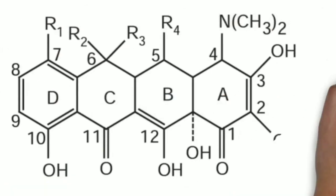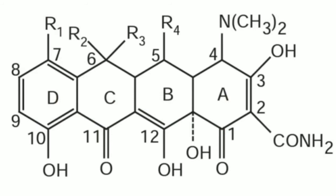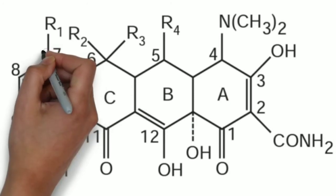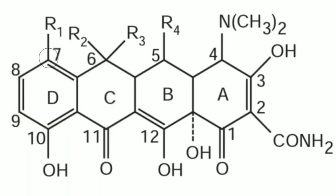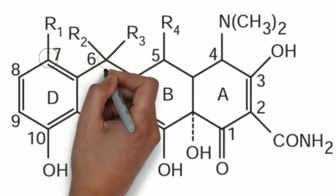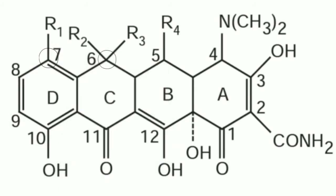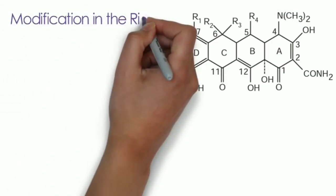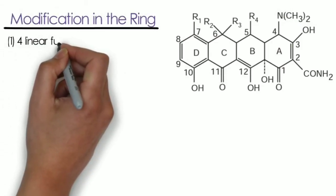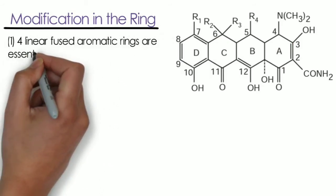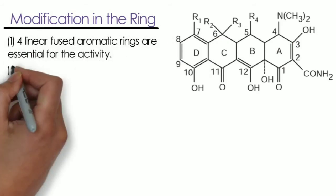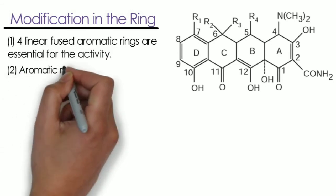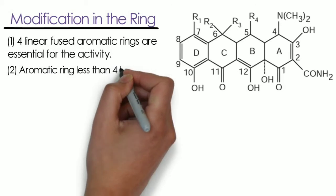Now we are capable enough to discuss the points of modification and their effect on activity. The structure has minor modifications: R1 substitution at the seventh position, R2 and R3 substitutions at the sixth position, and R4 substitution at the fifth position. If we do modifications to the ring, the first point is that four linear fused aromatic rings — A, B, C, and D — are all essential for activity. Omitting one ring leads to loss of activity.